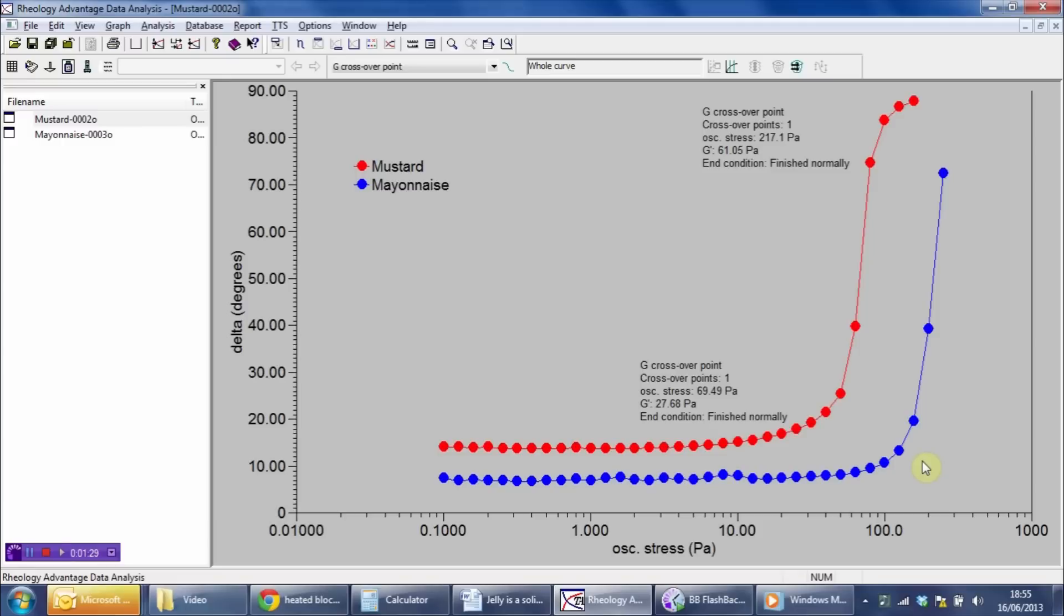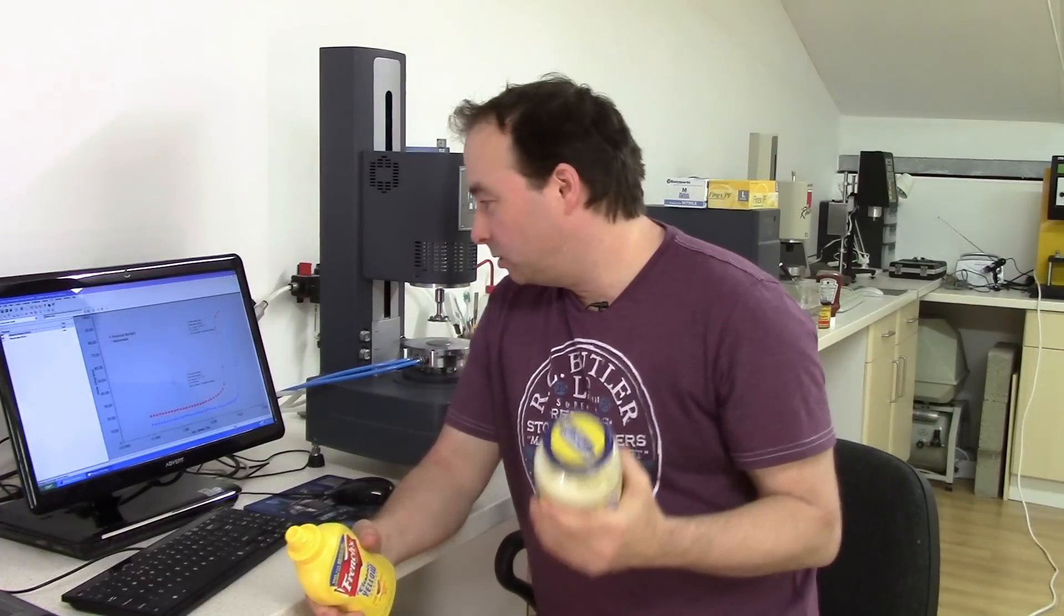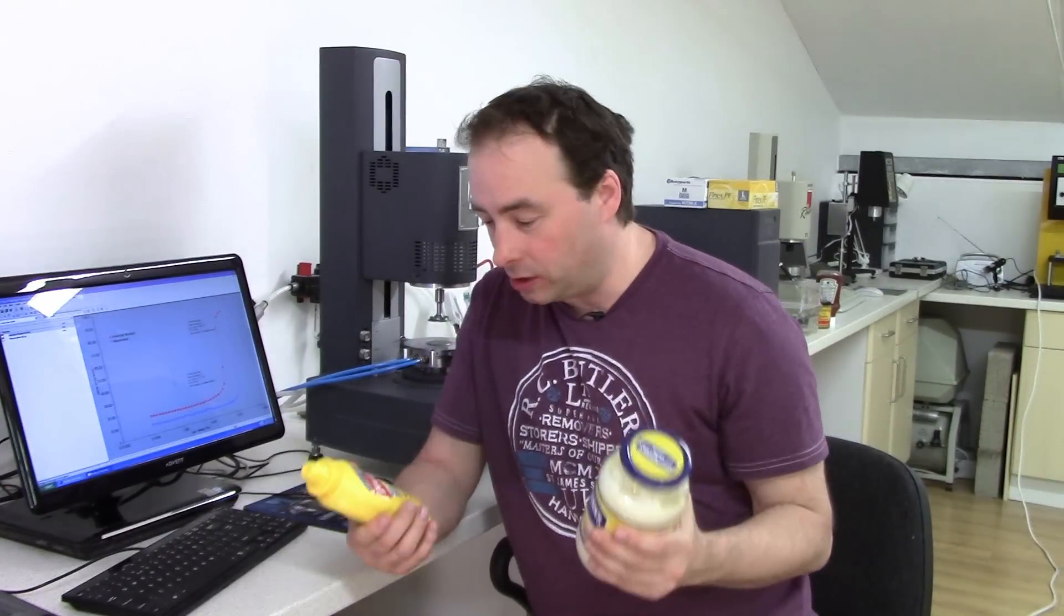So what we've done here is we've performed a test that has applied some very gentle stresses to our samples, identified that there's some structure present—that's the low phase angle value we're getting here for both of these samples—and then identified the stresses that are required to disrupt that structure, signified by the rise of the phase angle, the ongoing yield. So the mayonnaise has a yield stress of around about 217 Pascals. The mustard has a yield stress of only 70 Pascals. That means that the mayonnaise is three times stronger than the mustard.